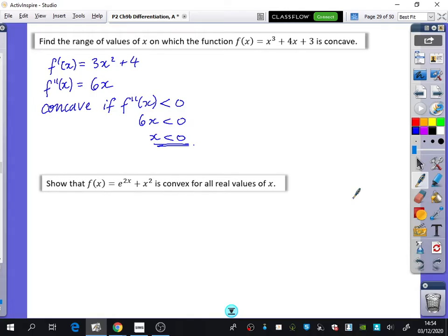This next one wants us to show that f(x) = e^(2x) + x² is convex for all real values. So you know what to do. We'll find the gradient function, which this differentiates to 2e^(2x) + 2x. We then differentiate it again. So you can see how this is the applications part of differentiation.